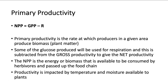Productivity can be impacted by certain things like temperature, precipitation, or moisture available to the producers within the ecosystem. Rainforests are going to be highly productive because it's usually warm and wet most of the time. But in the eastern United States, we see during fall and winter that trees start to change colors and kind of shut down because they don't have the temperature and moisture availability to continue the same rate of production.